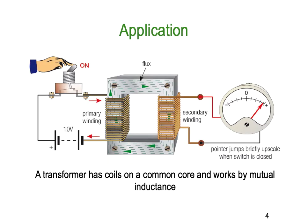One of the most common places we use this is with a transformer, which has coils and a common core and works by mutual inductance. As you can see in this diagram, we've got a primary winding. When we turn that primary winding on, for the brief time it takes for current and magnetic field to build up, that magnetic field is produced in the core of the transformer and that flux cuts the secondary winding.